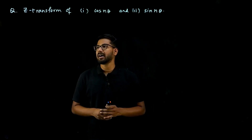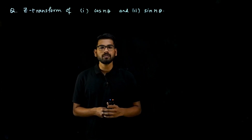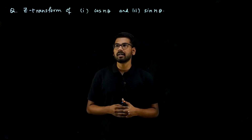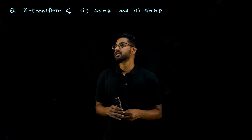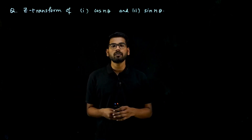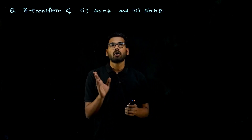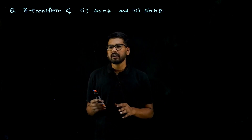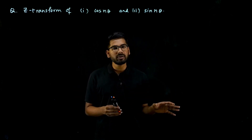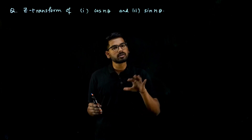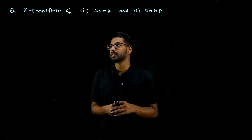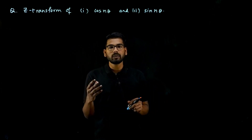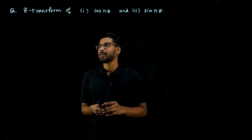Hey guys, I'm back with another question from the September 2020 M3 exam. The question is to find the Z-transform of cos(nθ) and sin(nθ). There is a straightforward way of doing this and a not-so-straightforward way — we'll do the shorter one because it's very easy.